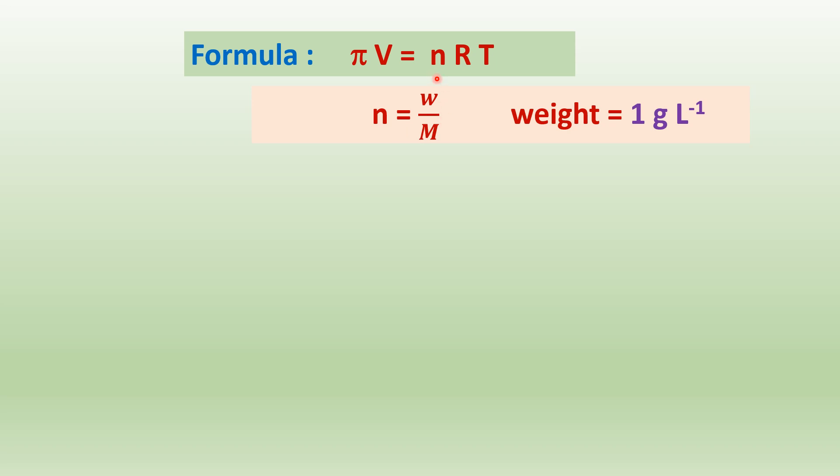n equals, as I said earlier, n equals W by M, where W is the weight of the polymer dissolved and M equals the molecular mass of the polymer or solute. Here, the weight of the polymer equals 1 gram per liter.